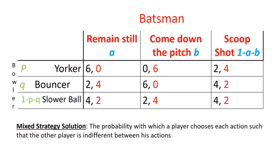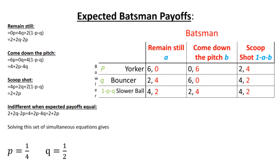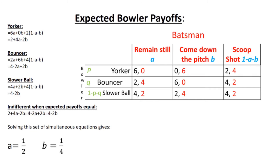We can solve this game in mixed strategy. This means that we calculate the probability with which each player chooses each action, so the other player is indifferent between their actions. To calculate this, we first look at the expected payoffs for each action the batsman can take, displayed in terms of bowler probabilities p and q. The batsman is indifferent between his actions when the expected payoff from each is the same, so we set them equal and solve the simultaneous equations. This gives the result p equals a quarter and q equals a half. Repeating this process for the bowler gives a equals a half and b equals a quarter.